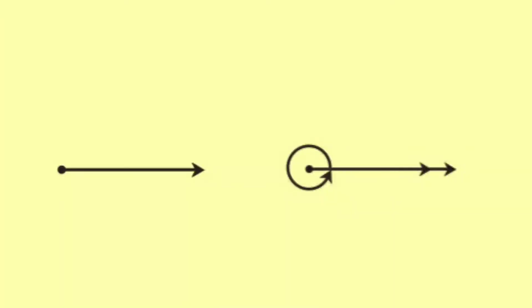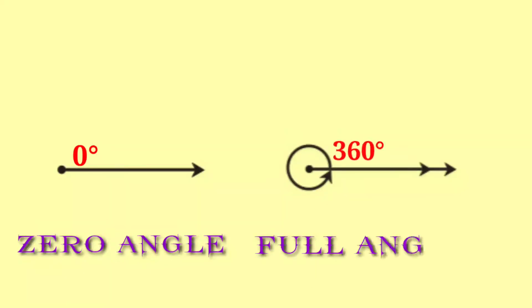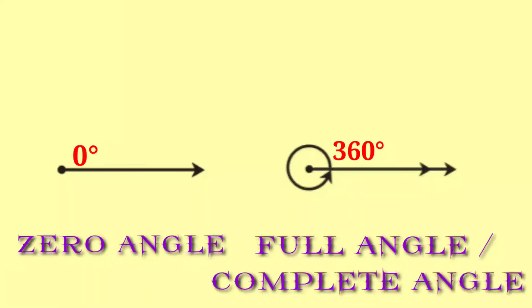Looking at these two figures carefully, they appear similar but there is a difference. The first figure shows a single arrow, which represents a zero-degree angle — that is, a zero angle. The second figure also looks like a zero angle, but at the point of origin there is a circle drawn. That circle means it is a full angle, a complete angle of 360 degrees, because both arrows have completed a full rotation back to the same position.